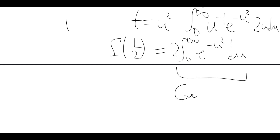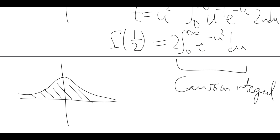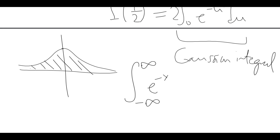This is often called the Gaussian integral. We can write it as the integral under the whole curve because it's symmetric around the y-axis. This is related to normal distributions, statistics, number theory, analysis, and all kinds of things. So what is the actual value? Well, there's a well-known trick, which is to take two copies of this integral and multiply them.